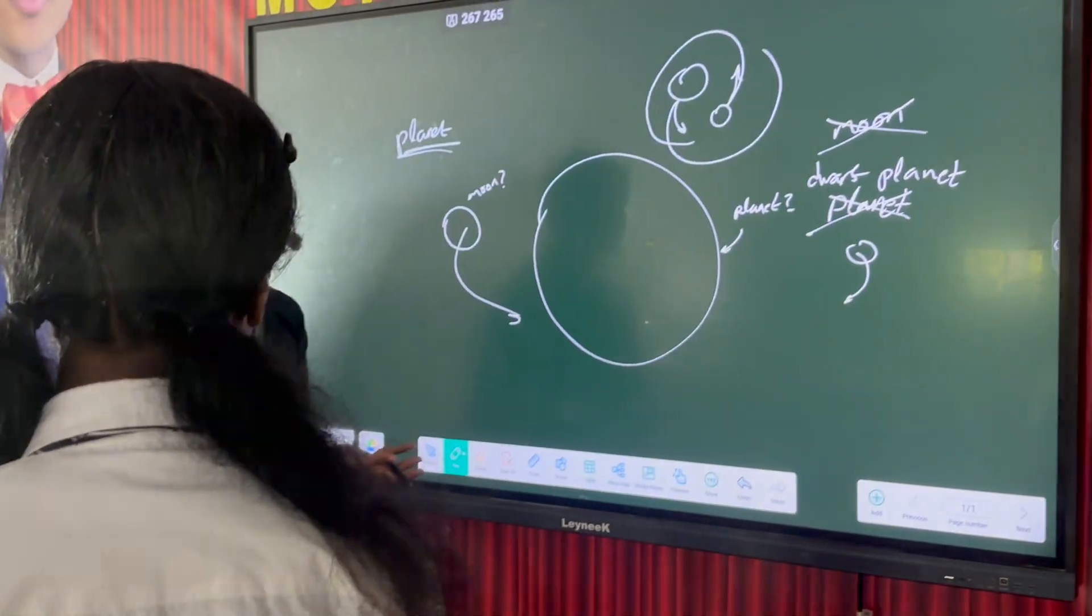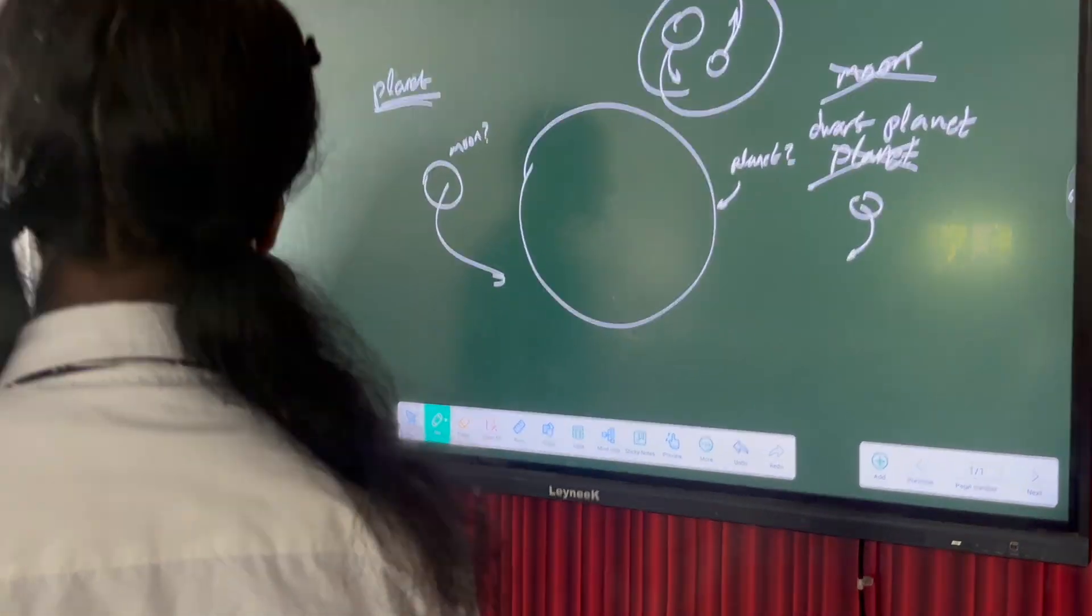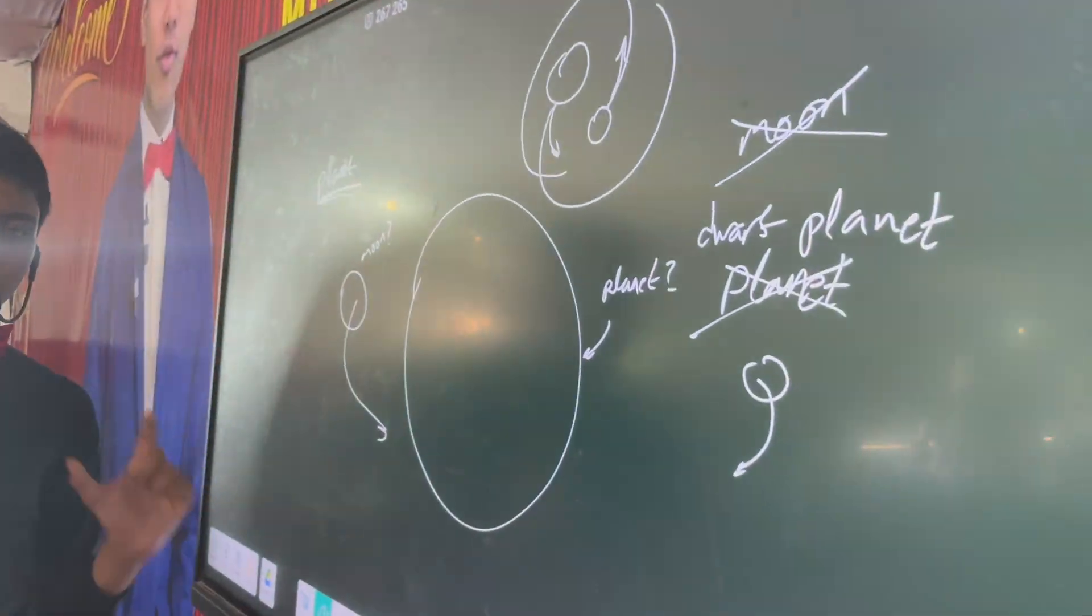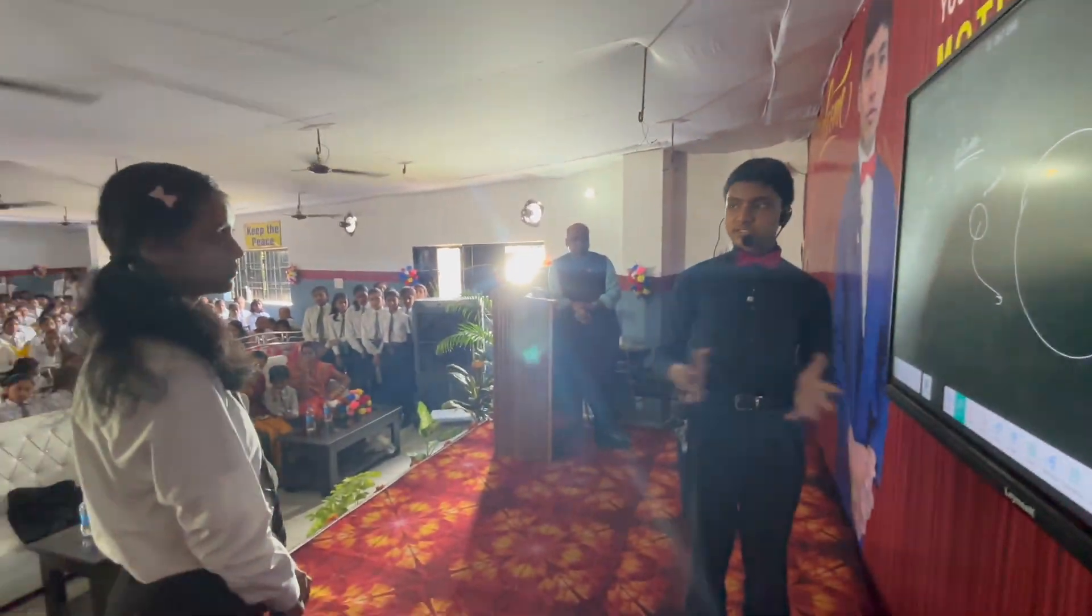And so people have proposed to call it a dwarf planet instead. Now that's a totally subjective definition, which is why it changed in 2006. It's just what we humans call it. But really, there's nothing different between a dwarf planet and a planet, except its size.